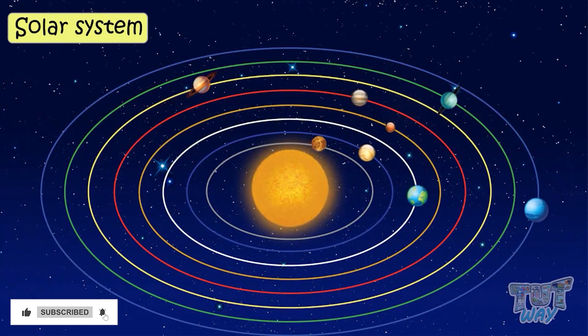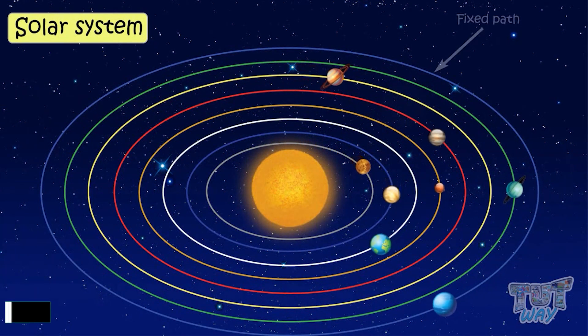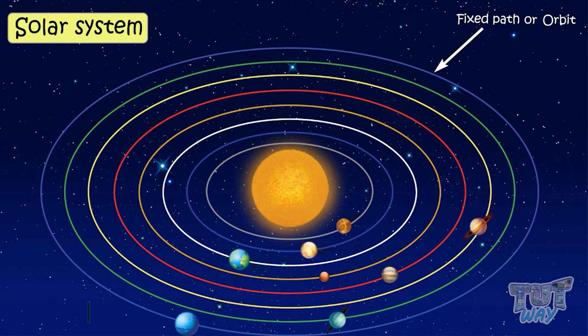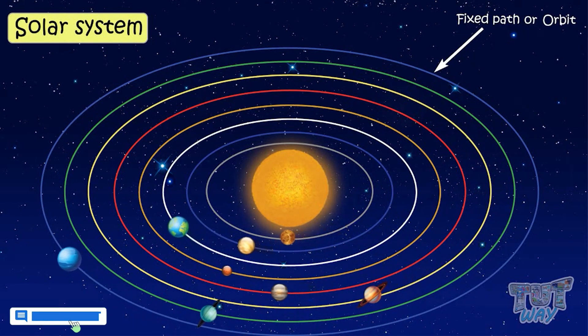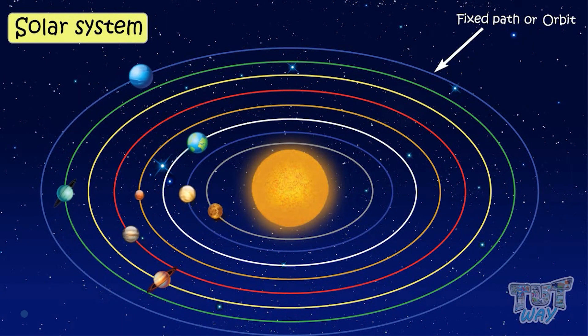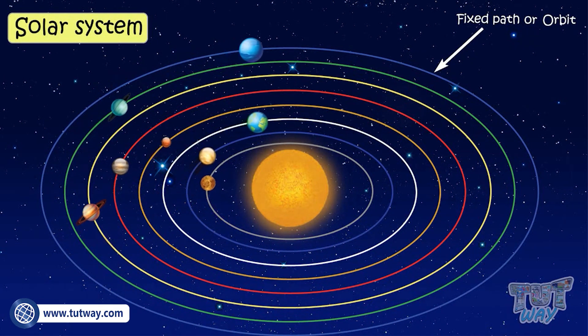They all revolve around the Sun in fixed paths called orbits. So, orbit is a fixed path on which a planet revolves.